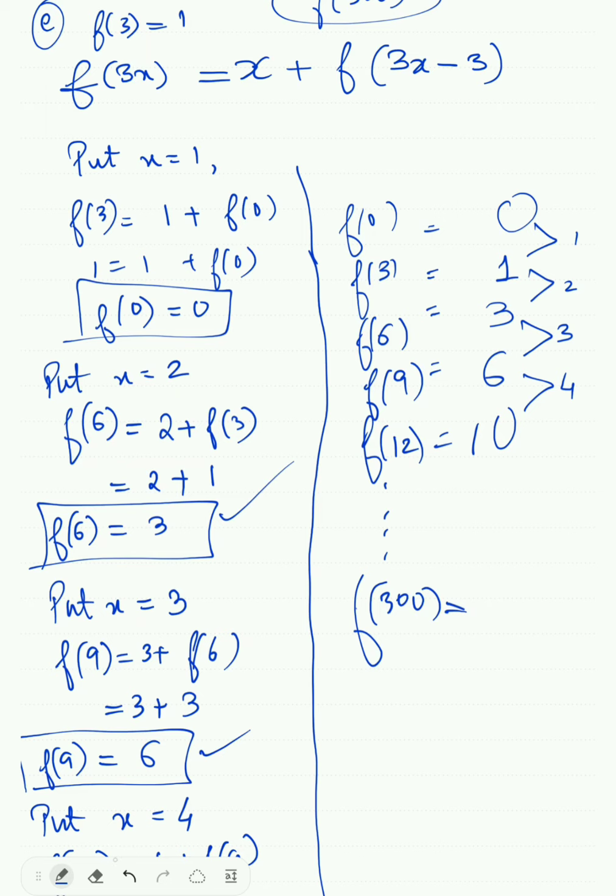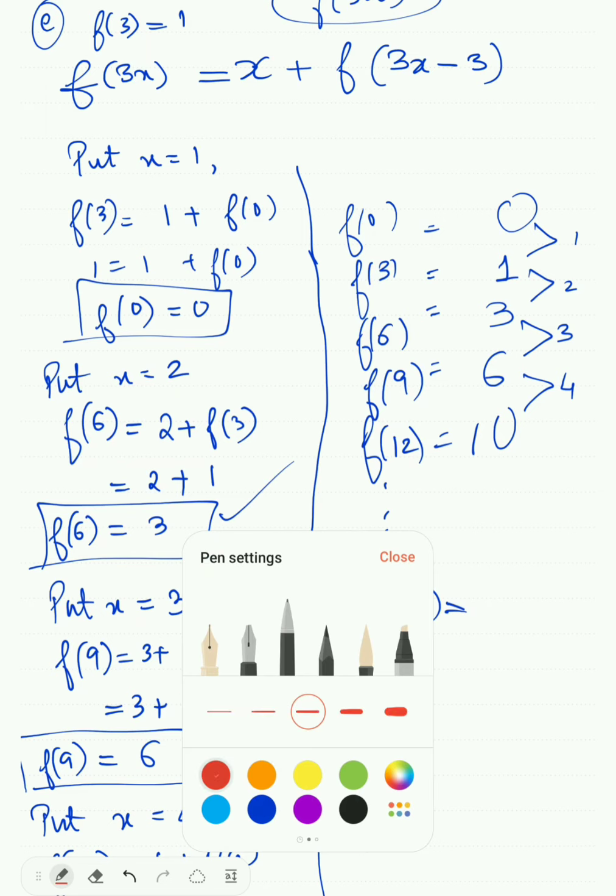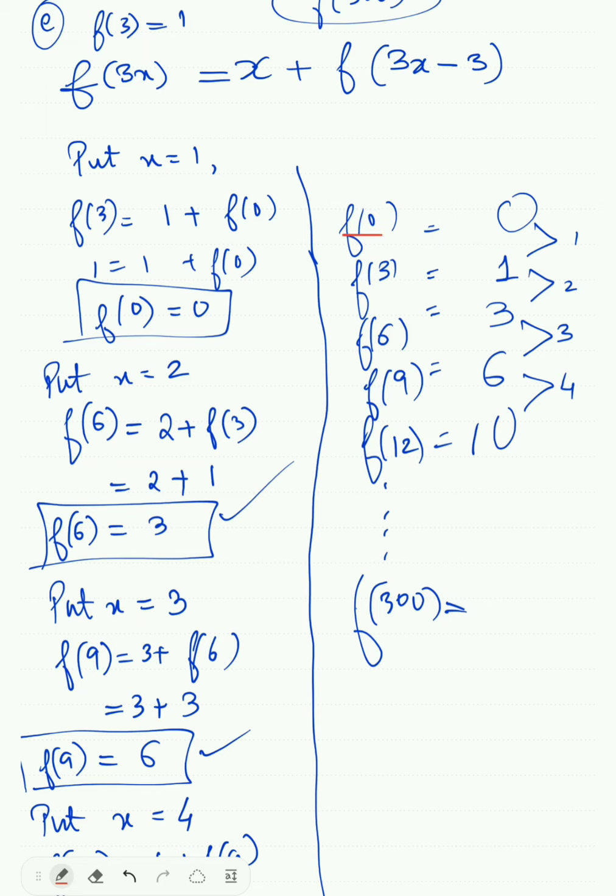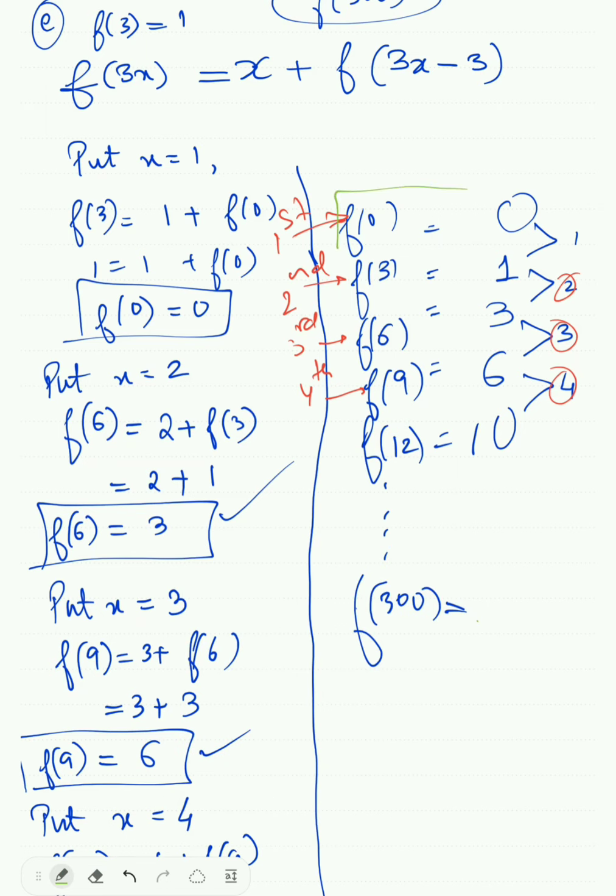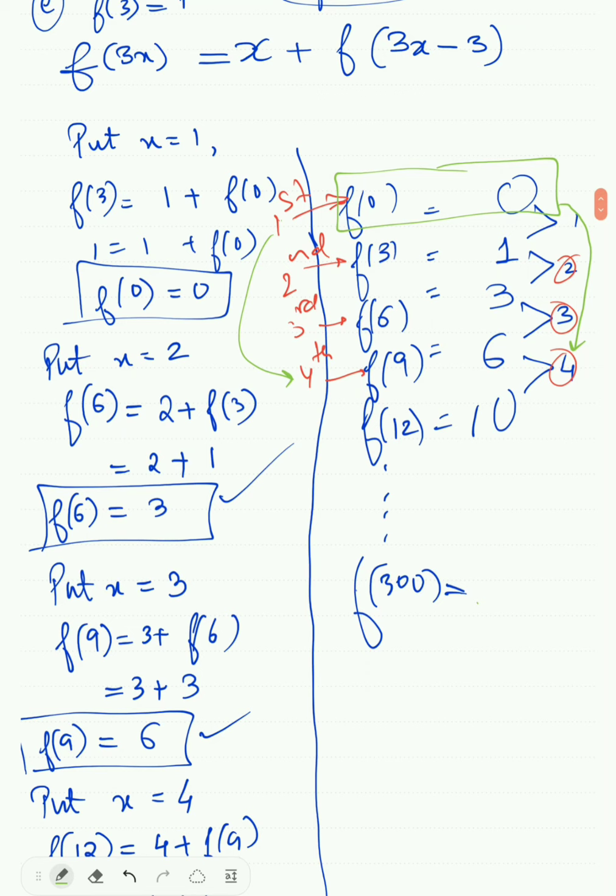So if we look at the trend, first term the difference is 1, second term the difference is 2, third term is 3, fourth term the difference is 4. So I can go directly and make a pattern - we need to add the numbers 1 plus 2 plus 3 plus 4 and so on.